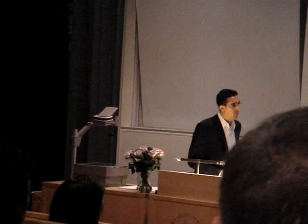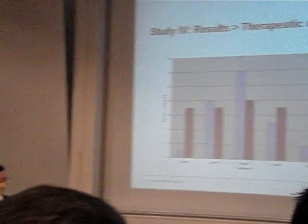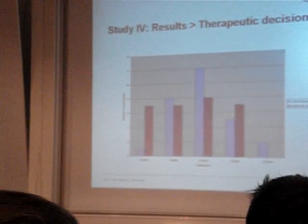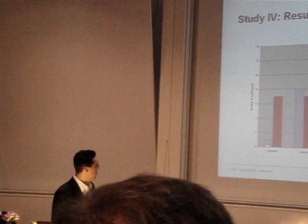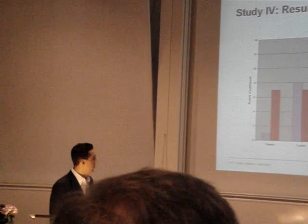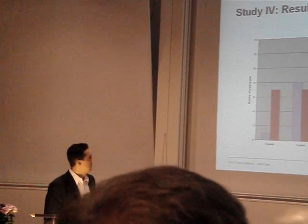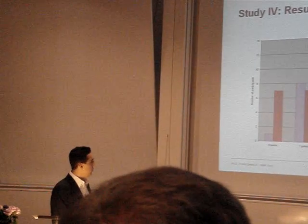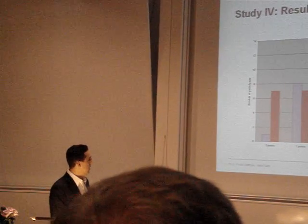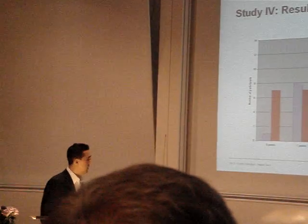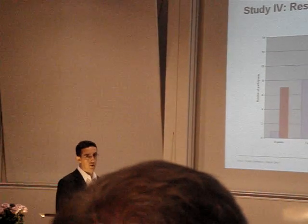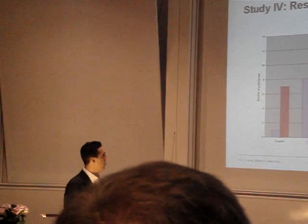This is the primary outcome: the total score of the therapy decisions. They could score between zero and four points. When doing a statistical analysis, we couldn't find any significant difference between the groups.